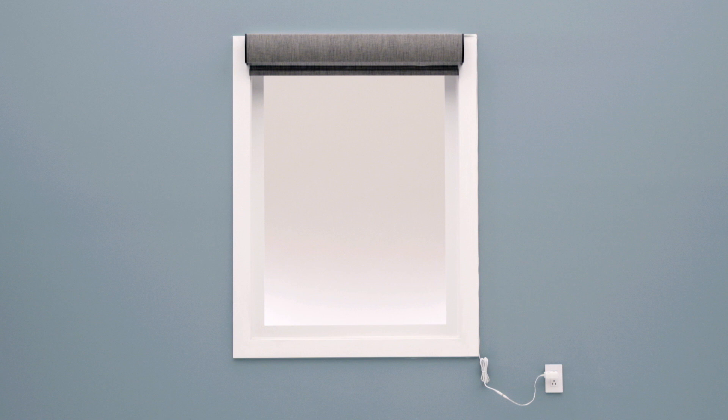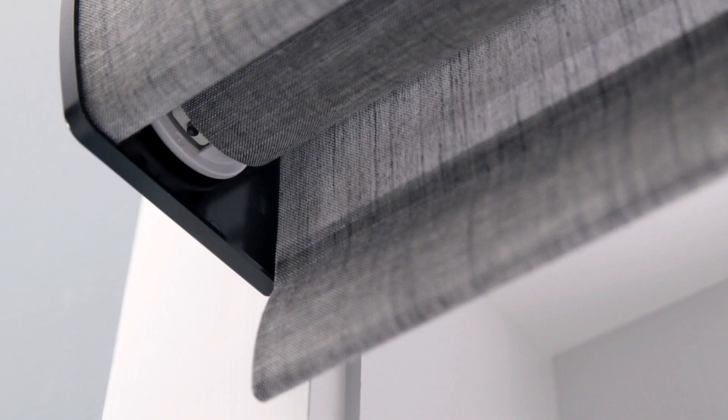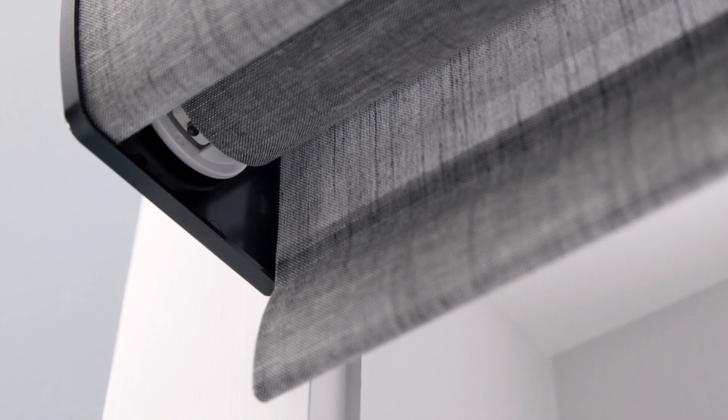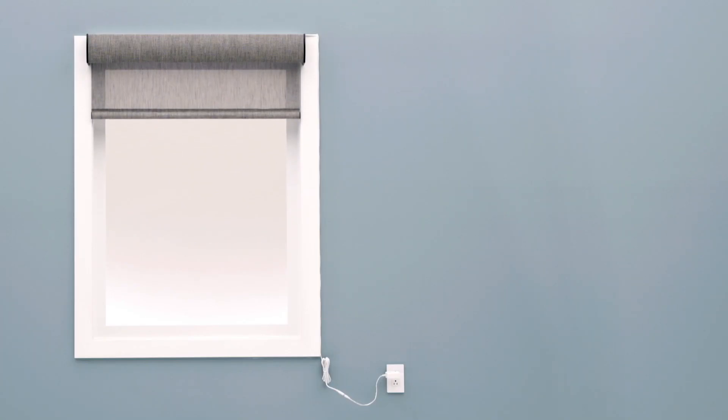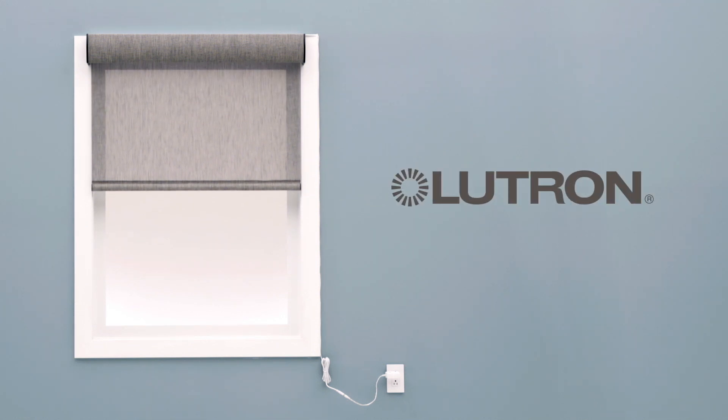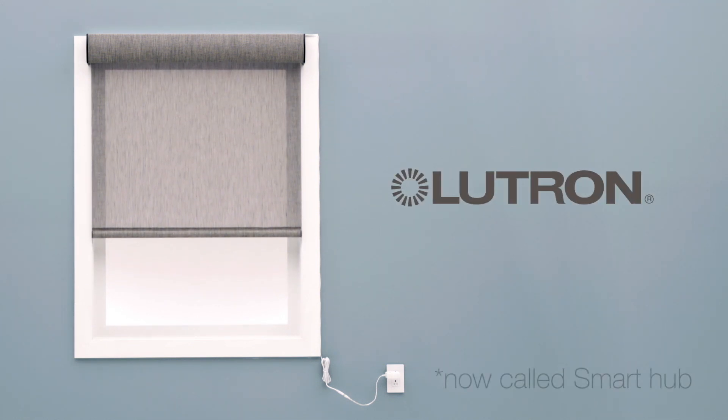Outlets may be located above or below the window and can be hidden by a window treatment. The shade button LED will flash green-red once power is connected. That's it for installation. Now you're ready to program your Pico remote control or set up your smart bridge using the Lutron app.